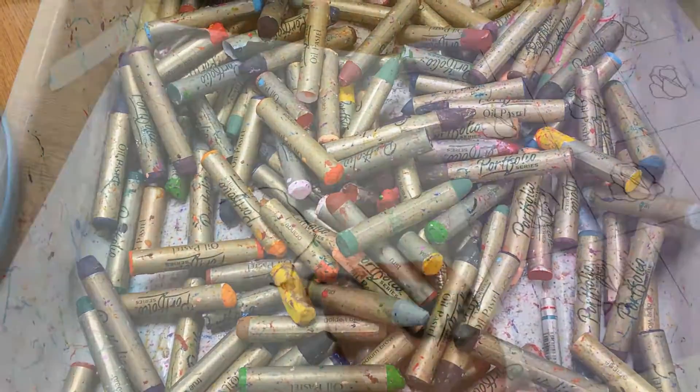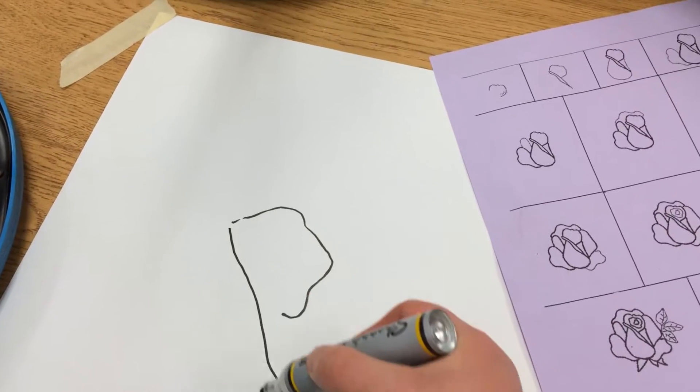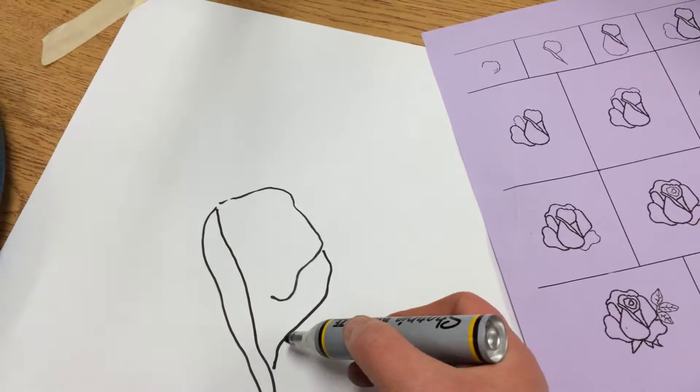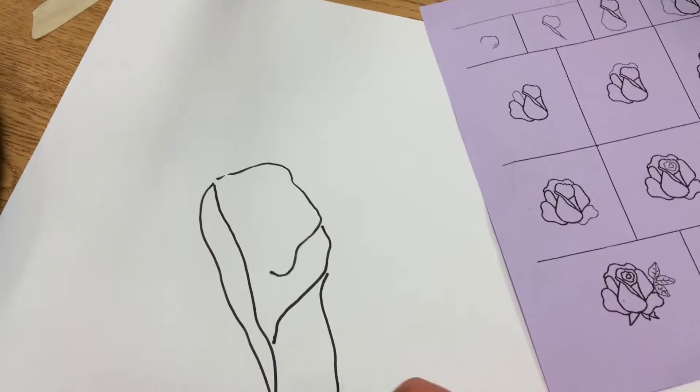Today's project involves using water-soluble oil pastels. You're going to be filling an 18 by 24 piece of paper with five different flowers.